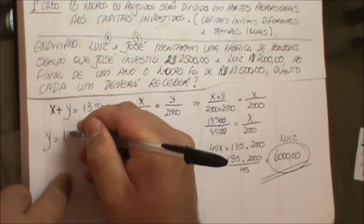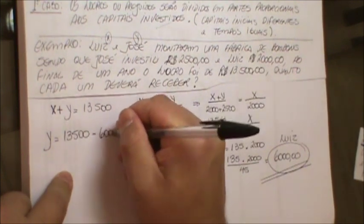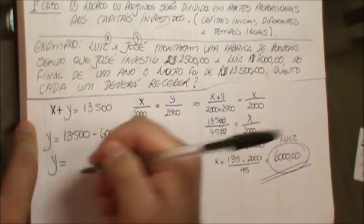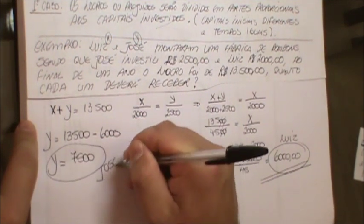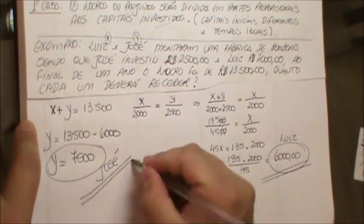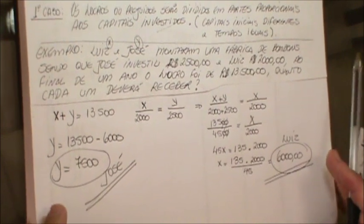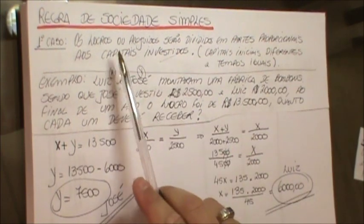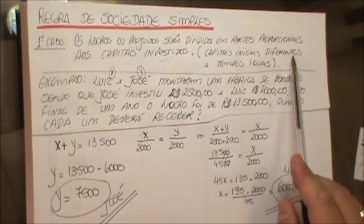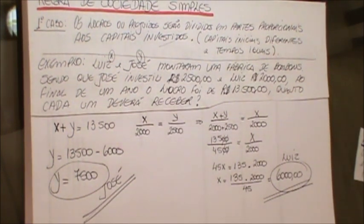Logo, o Sr. José, que é Y, vai ser R$13.500 menos R$6.000, portanto Y igual a R$7.500, que é o valor de José. Está aí o nosso primeiro exemplo de regra de sociedade simples, onde os capitais iniciais são diferentes mas foram aplicados em tempos iguais. É só fazer uma divisão diretamente proporcional.